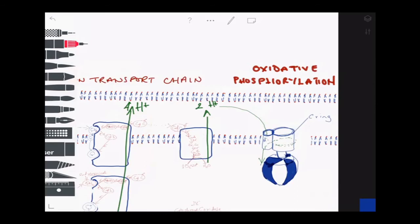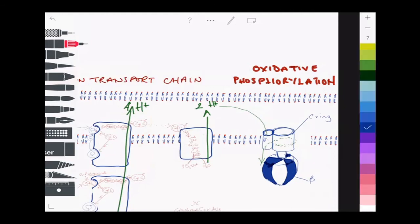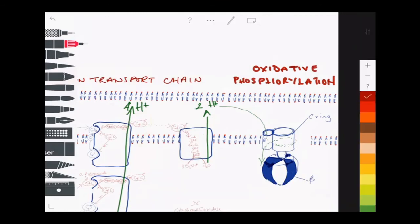The rotation of the c-ring causes conformational changes in the beta subunits of the stator unit of ATP synthase. These conformational changes drive the reaction of ADP and inorganic phosphate to form ATP.